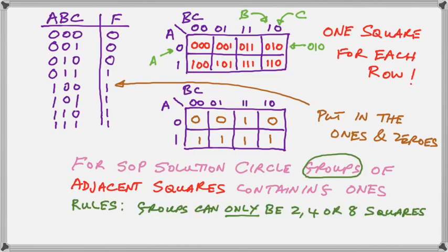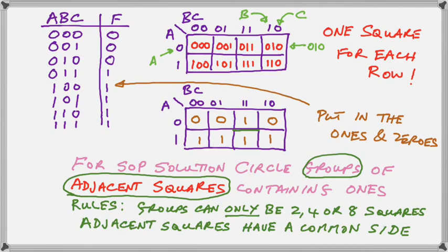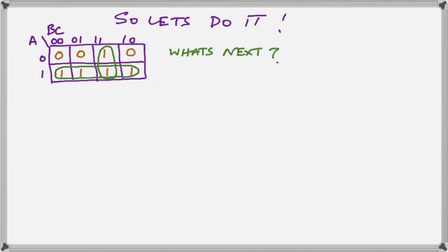The rules concerning the groups are that a group of circle squares can only have 2, 4, or 8 squares. You cannot circle groups with 3, 5, or 7. It must be a power of 2. The adjacent squares have a common side as shown above.